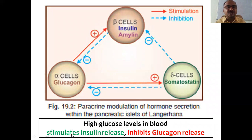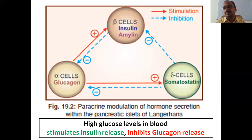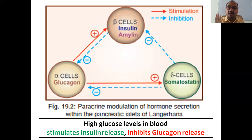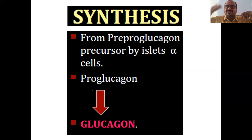High glucose levels in the blood stimulate insulin release and inhibit glucagon release. If you are taking plenty of sugar, the pancreas starts releasing insulin to compensate. Whereas glucagon release is inhibited when blood sugar is very high. Now let's see how glucagon is synthesized in the alpha cells.